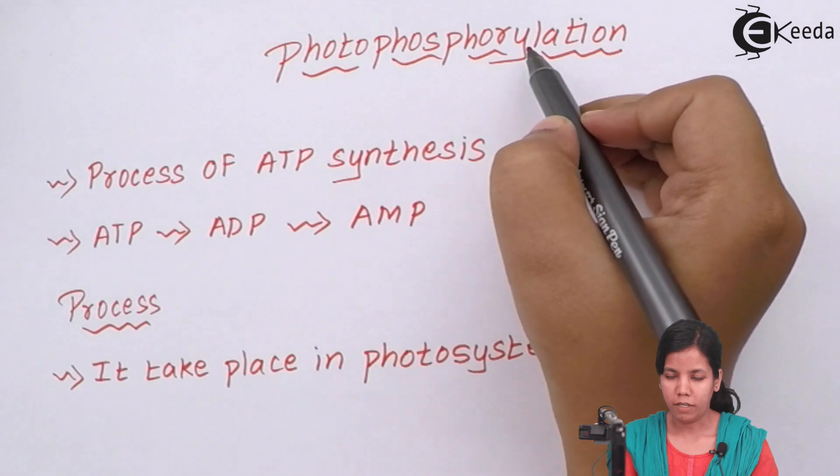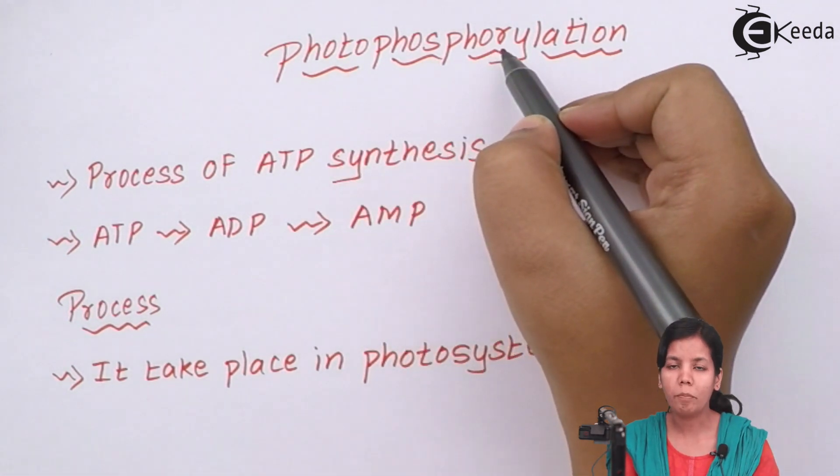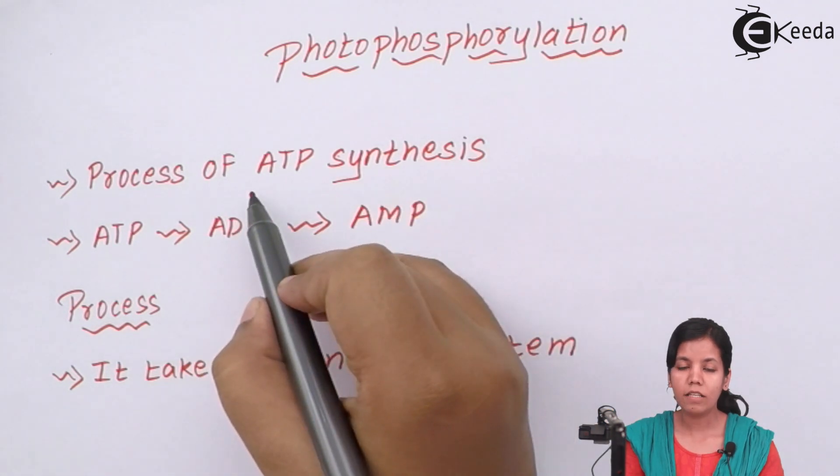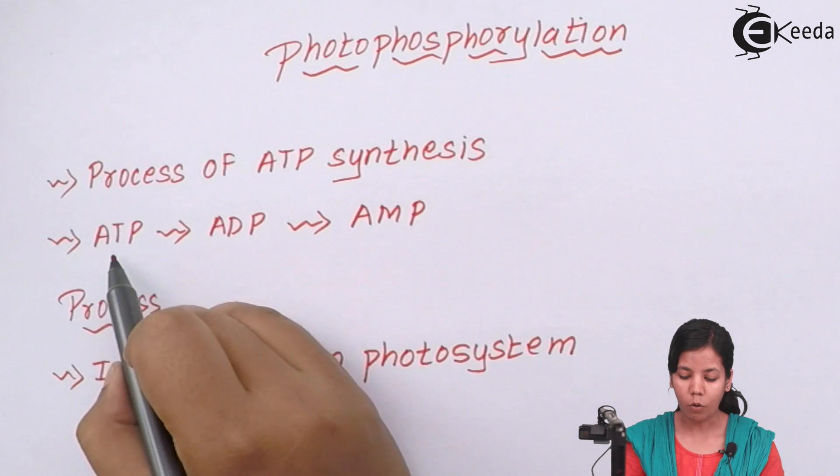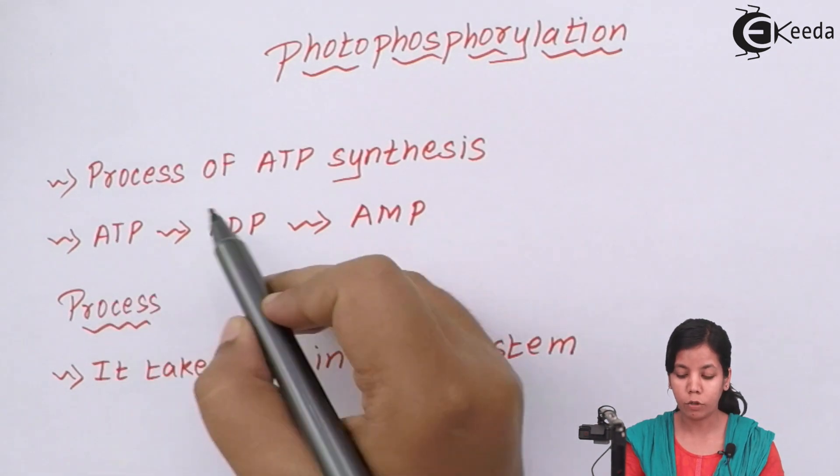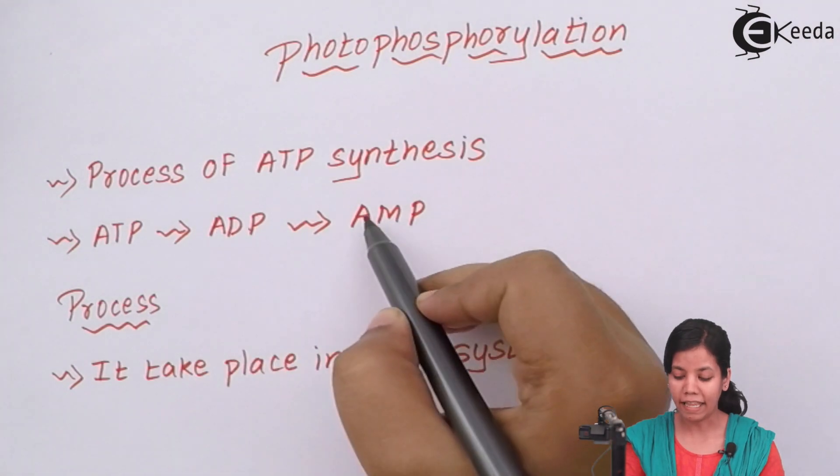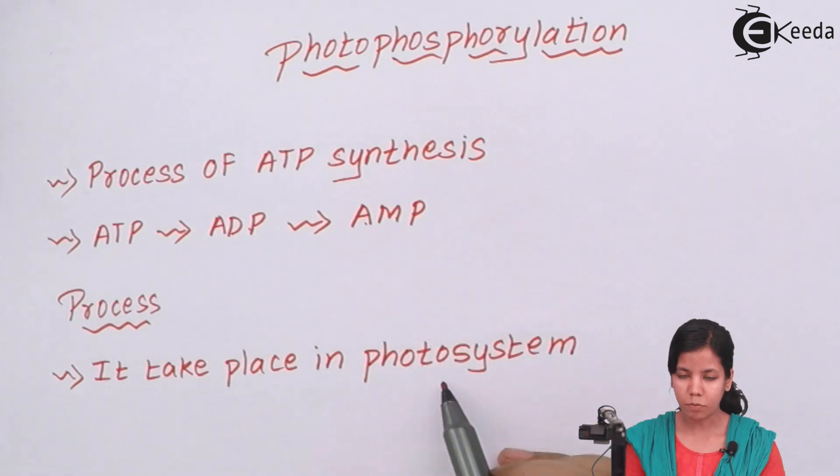Photophosphorylation - photo means sunlight and phosphorylation means breakdown. Basically, the process of photophosphorylation is ATP synthesis: how ATP, from adenosine triphosphate, gets converted into ADP, adenosine diphosphate, and then into AMP, adenosine monophosphate. This process takes place in photosystems.